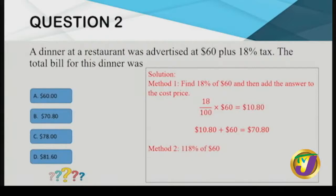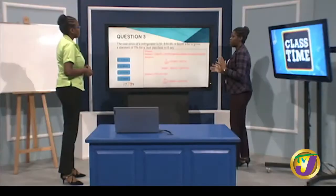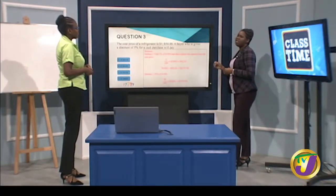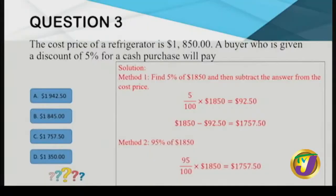Question three: a refrigerator costs $1,850 and the buyer is given a discount of 5% for cash. We want to know how much the person will pay after the discount — a reduction in price. Looking at the answers: option A is more than $1,850 so we eliminate it; option D is too far off for a 5% discount, so we eliminate A and D.